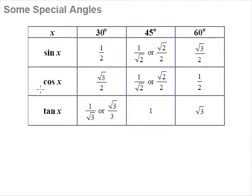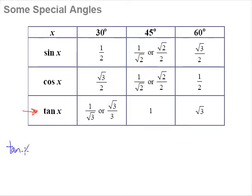Now let's talk about tangent. You may notice there's no obvious pattern in tangent the way there is for sine and cosine. There are again two forms due to rationalization of surds. However, tangent is indeed related to sine and cosine: tangent x equals sine x over cosine x. This means tangent is actually a ratio of sine and cosine.